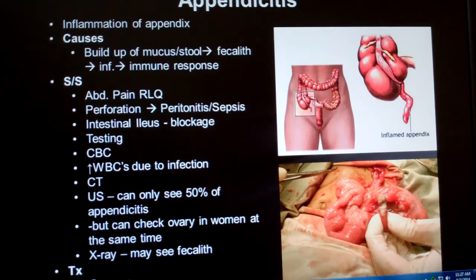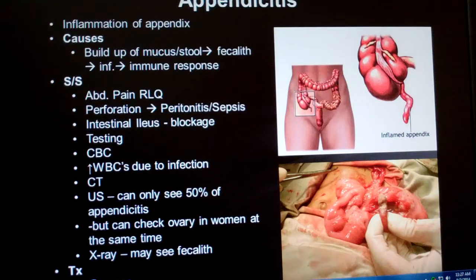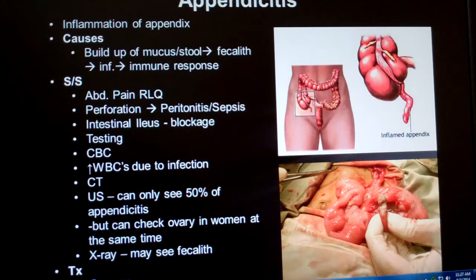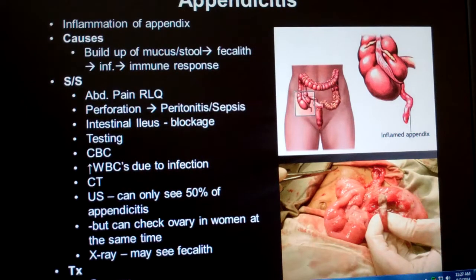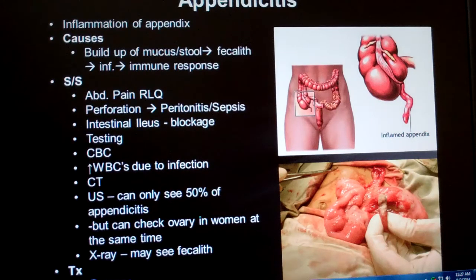Unfortunately, more often than not, it doesn't present in this classical pattern. The patient does get the pain, nausea and vomiting, but then may not have any tenderness over the appendix, or the tenderness may even manifest at a completely different location. That's why it's so hard to be sure of appendicitis. An abdominal CT should find it, though. Ultrasound is only about half right.